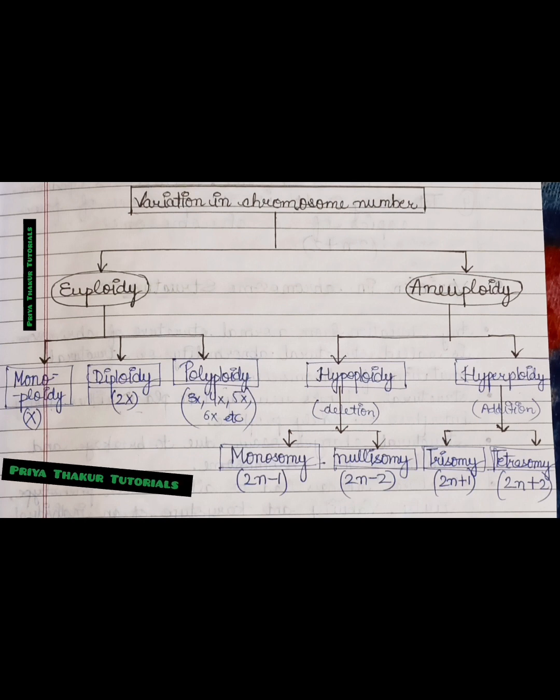Euploidy includes monoploidy, diploidy, and polyploidy. On the other hand, aneuploidy is further divided into two types: hypoploidy and hyperploidy. Hypoploidy is of two types, monosomy and nullisomy, and hyperploidy is divided into trisomy and tetrasomy. Let us discuss them in detail.